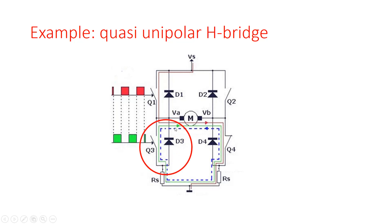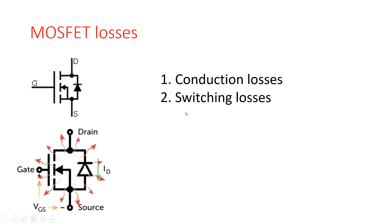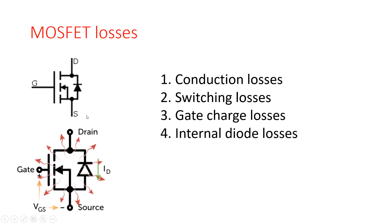Now let's look at the complete dissipation of all losses within MOSFET Q3. We have five types of MOSFET losses. First, we have conduction losses — I² R losses. Second, in a switching application we have switching losses. Third, we have gate charge losses to charge the gate capacitances and put the MOSFET into conduction. Fourth, we have internal diode losses due to the portion of the switching period in which current flows through the body diode. And fifth, we have fast recovery losses. We will now discuss all five losses one by one.